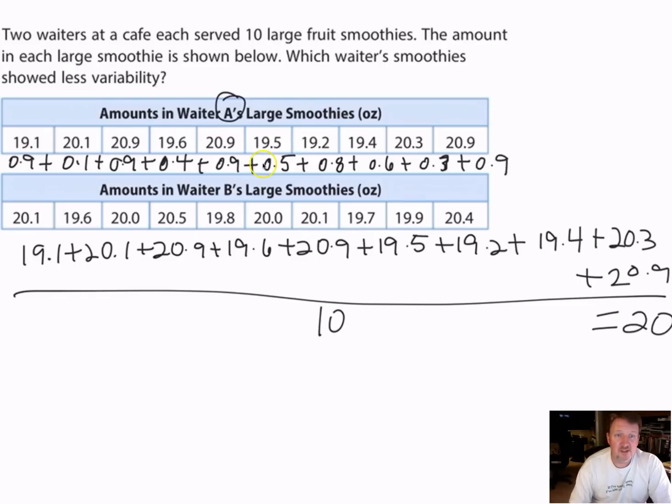So I have to do the same thing here. I have to add all these pieces of data up, and then I divide by ten, and that gives me my mean absolute deviation. So if I do that, I'm going to divide by ten, and what that gives me is a mean absolute deviation of 0.6. So that's the first one.